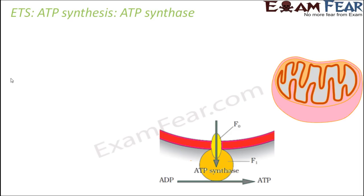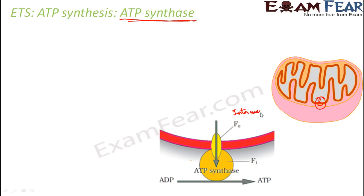Now complex 5, which I was talking about, is the enzyme ATP synthase. This is the structure of ATP synthase. If you magnify, the enzyme looks something like this. This region is the inter-membrane space and this region is the matrix.